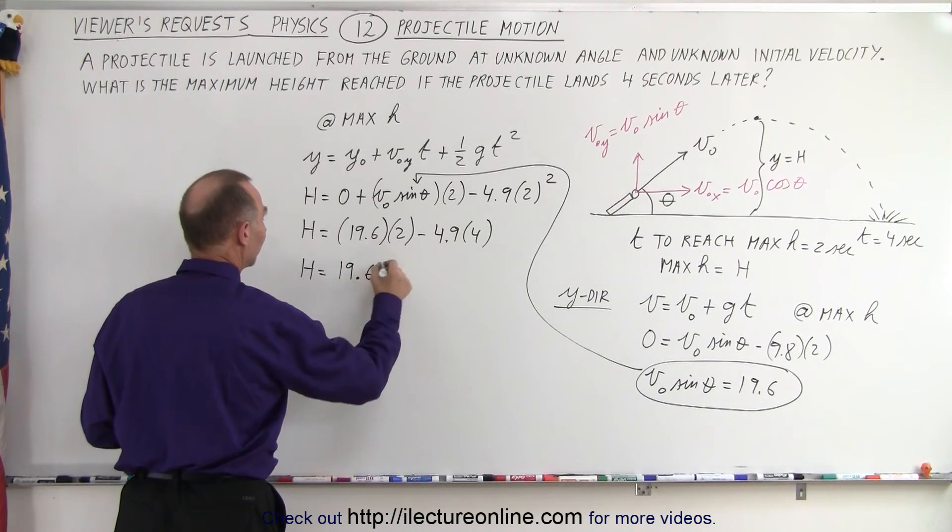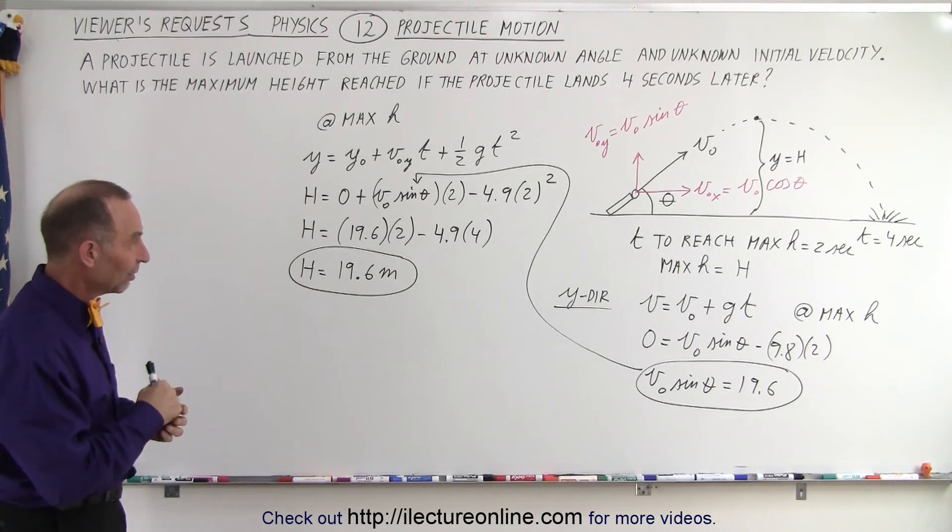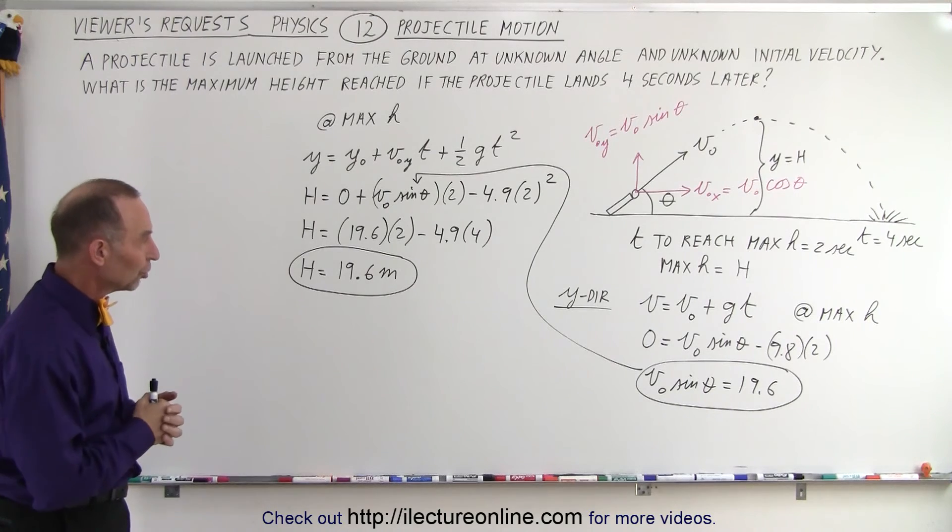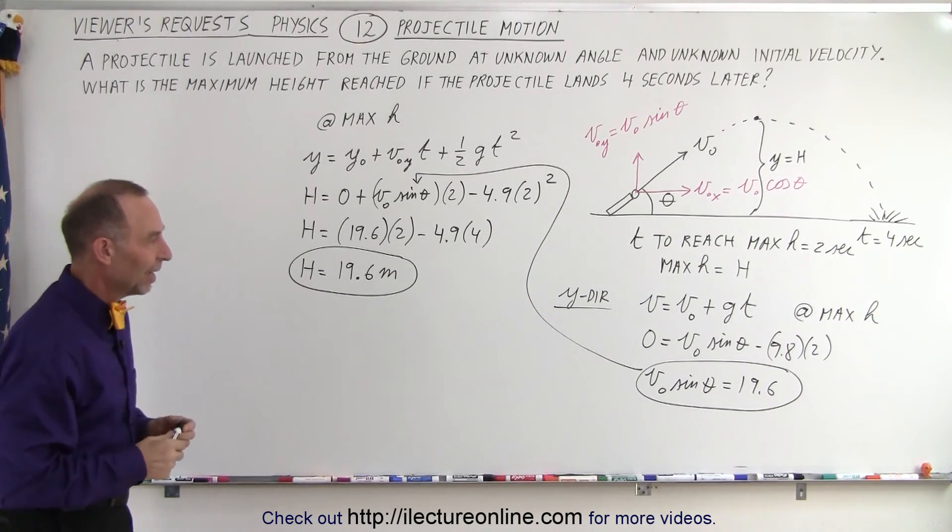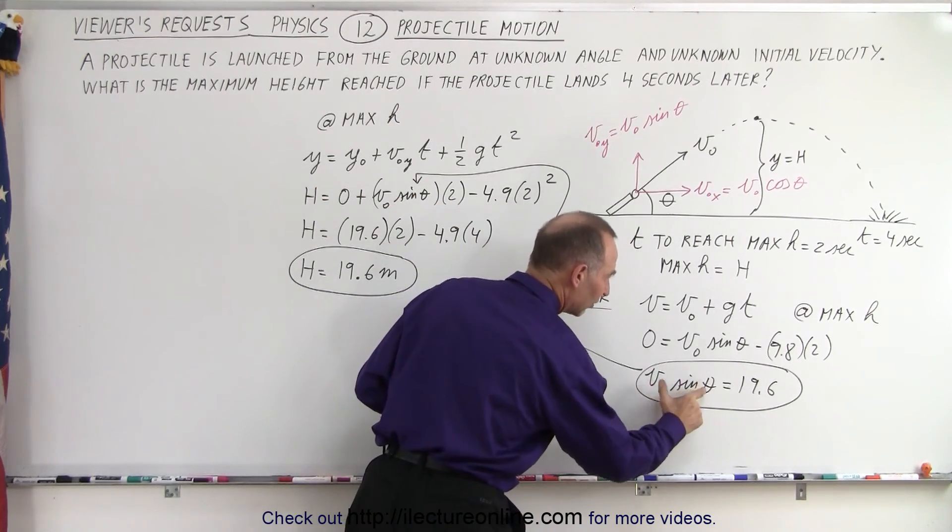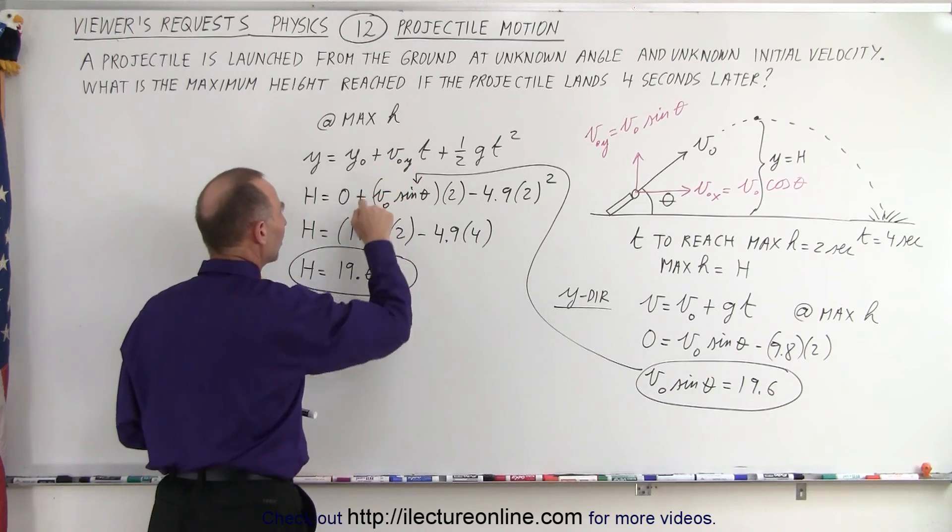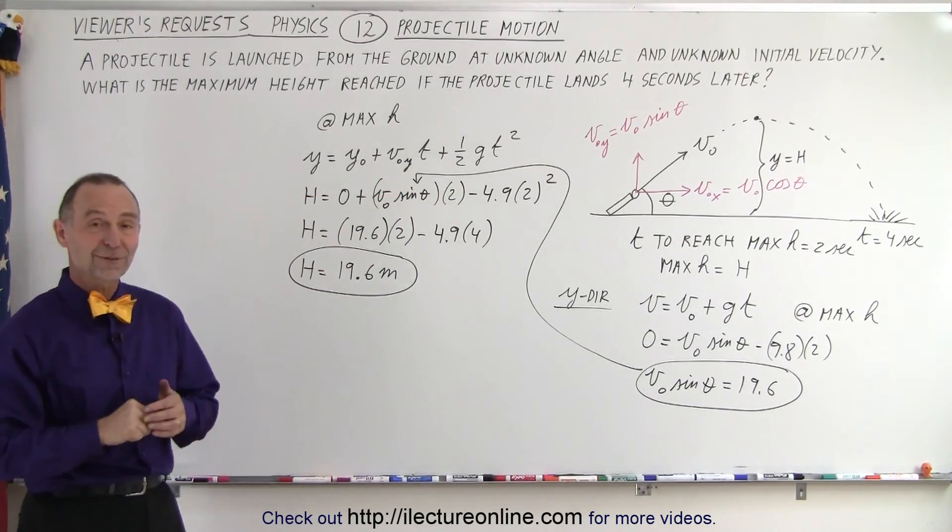So amazingly enough, the only piece of information we needed was that it took four seconds for the entire projectile motion, only half that time two seconds to reach the maximum height, and by only solving for v sine theta as a product in this equation and substituting it into this equation, we're able to find the maximum height. And that is how it's done.